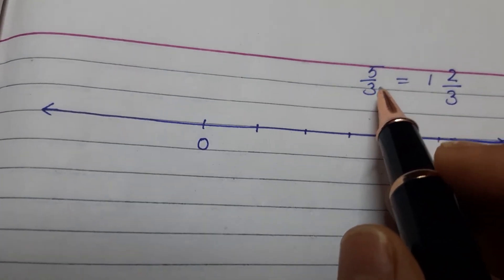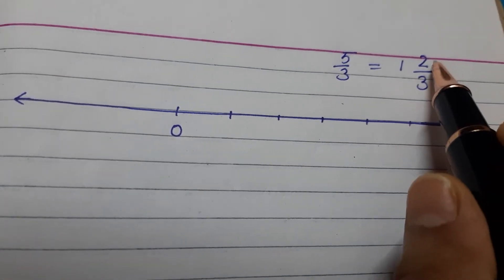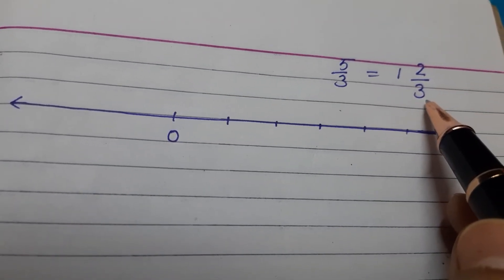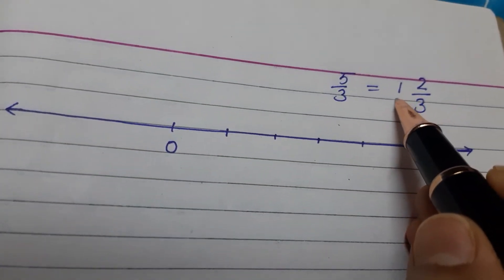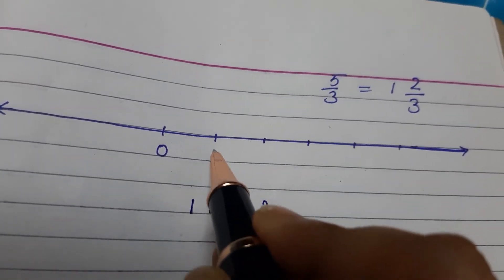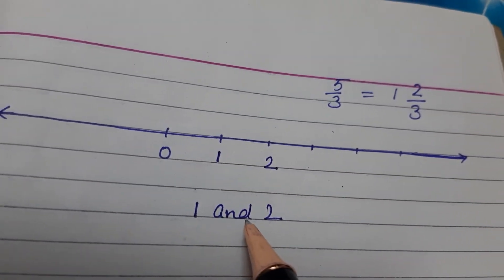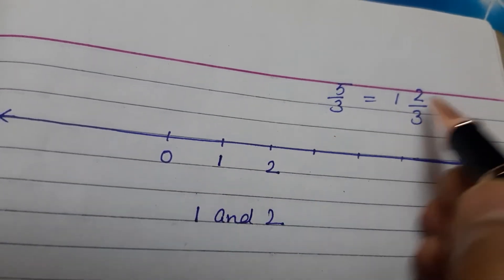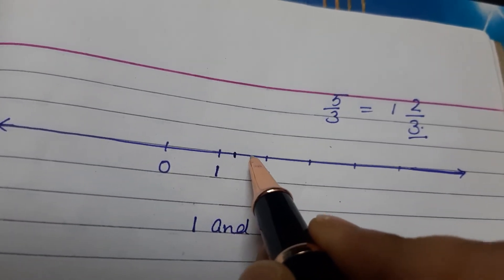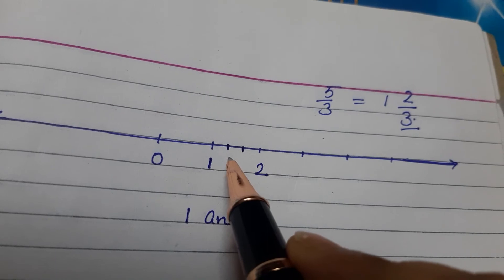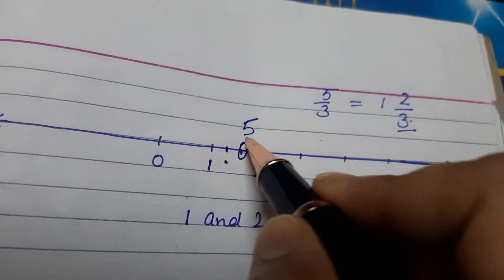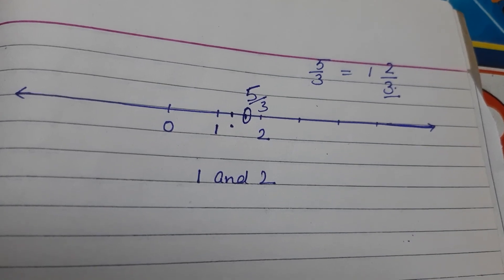To represent 5 by 3, we can also convert it into a mixed fraction. It comes out to be 1 and 2 by 3 — where 1 is the whole part and 2 by 3 is the fractional part. It means the number 5 by 3 lies between 1 and 2. So here is 1, here is 2, and it lies between them. After 1, we need 2 by 3 parts — the 3 tells us the number of equal parts, so we divide it into 3 equal parts. This will be 1 by 3 and this will be 2 by 3. So this point will be our answer, that is 5 by 3. By this method also, you can solve it.